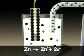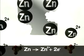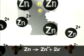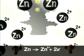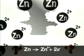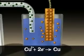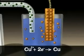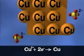Because zinc is a more active metal than copper, it is more likely to lose electrons. For this reason, the zinc bar is oxidized, producing a zinc ion and two electrons per zinc atom. The copper ions in solution gain two electrons and are reduced to copper metal.